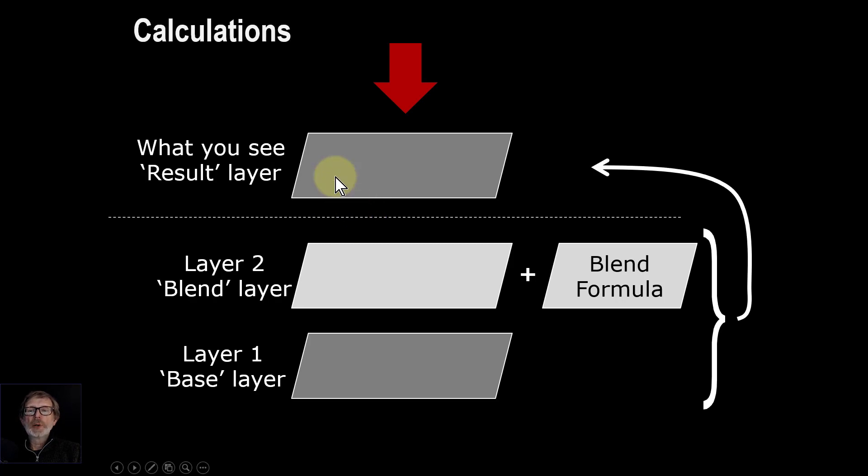Anyway, so when you calculate this, let's have a look at how it kind of works in practice very simply. Take one pixel, just one pixel, on the bottom layer here, the base layer, and suppose it's got red, green and blue like this. Then take the corresponding exactly same position pixel on the layer above it, the blend layer, and those are different red, green and blue.